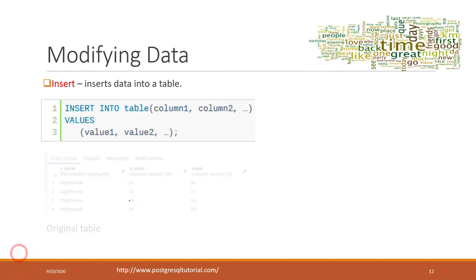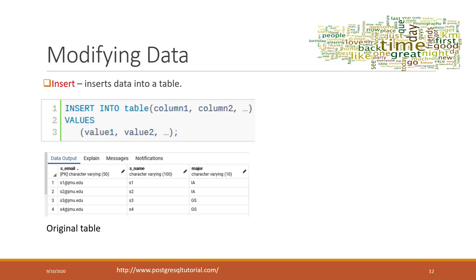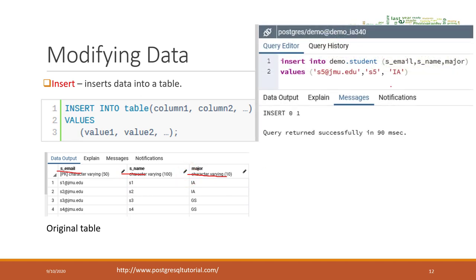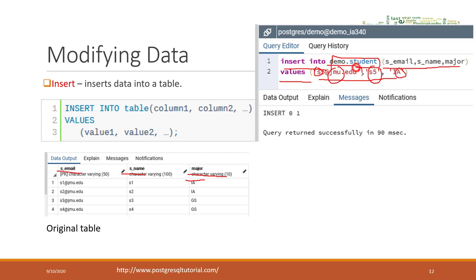Let's look at an example. We have a student table with student email, student name, and student major. The SQL code says INSERT INTO the table, specifying which columns to insert. I want to insert values for email, student name, and also major, following the same order.